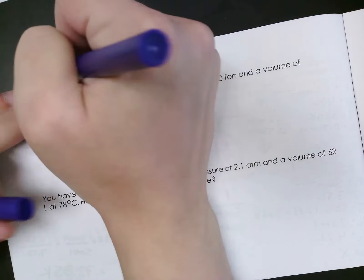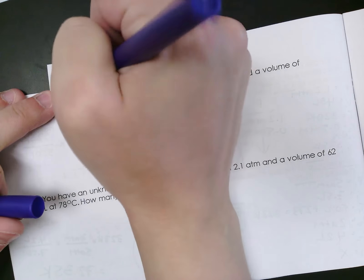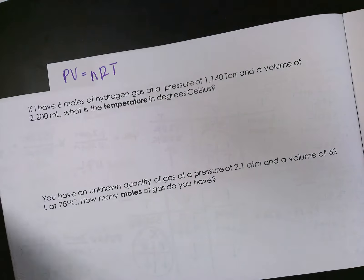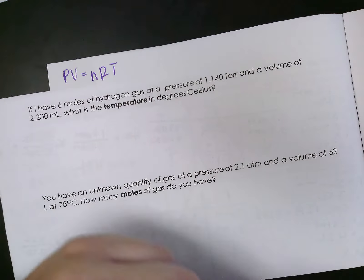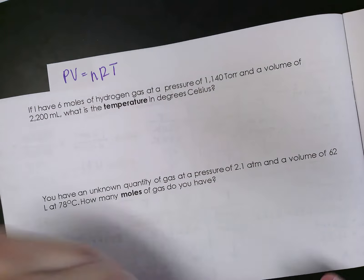So the formula for the ideal gas law is PV equals nRT. Now that you have the equation, you have to know what each letter represents.